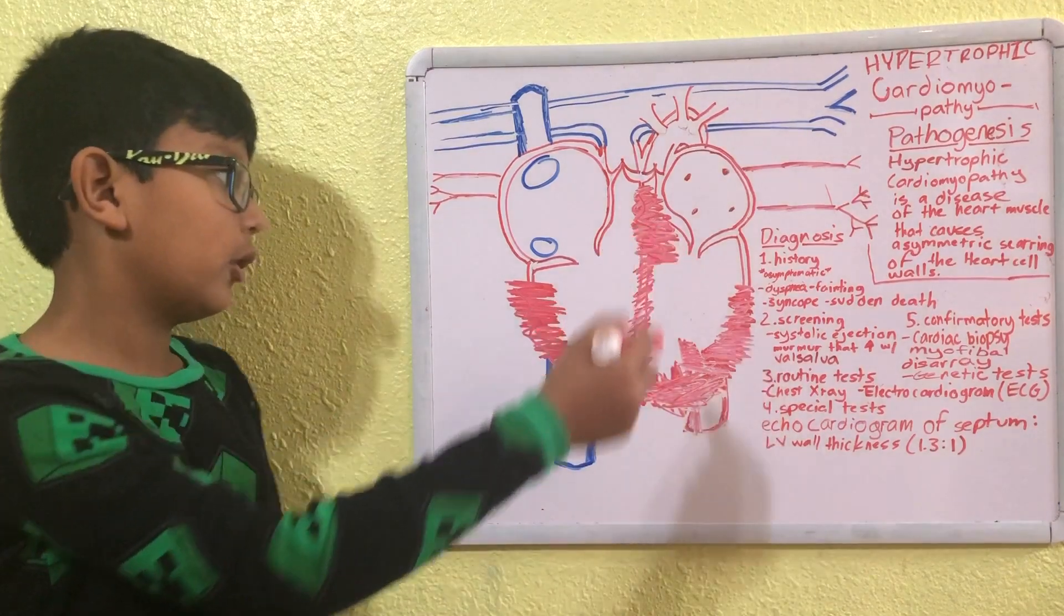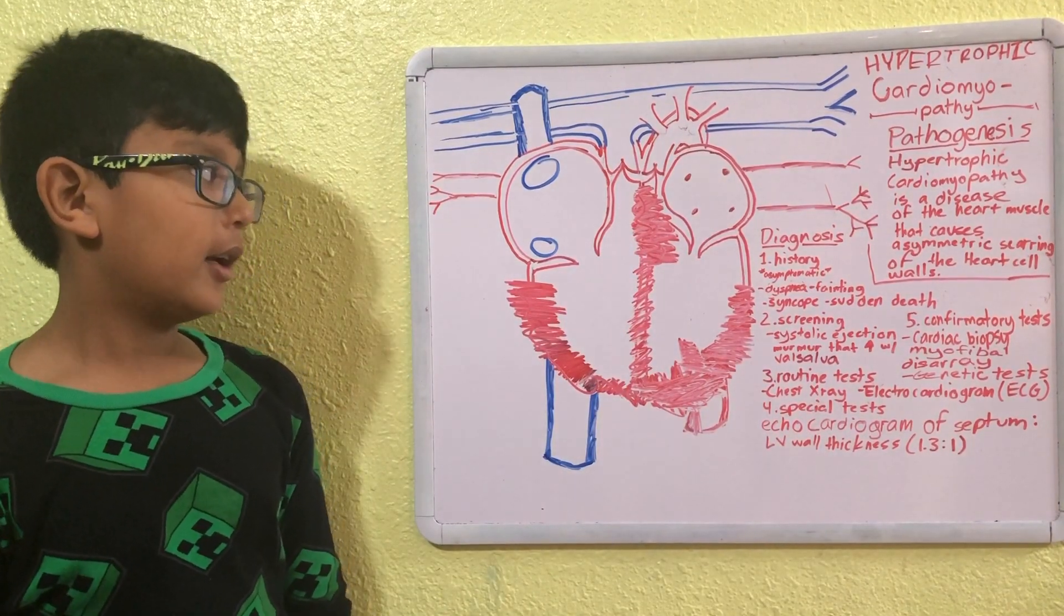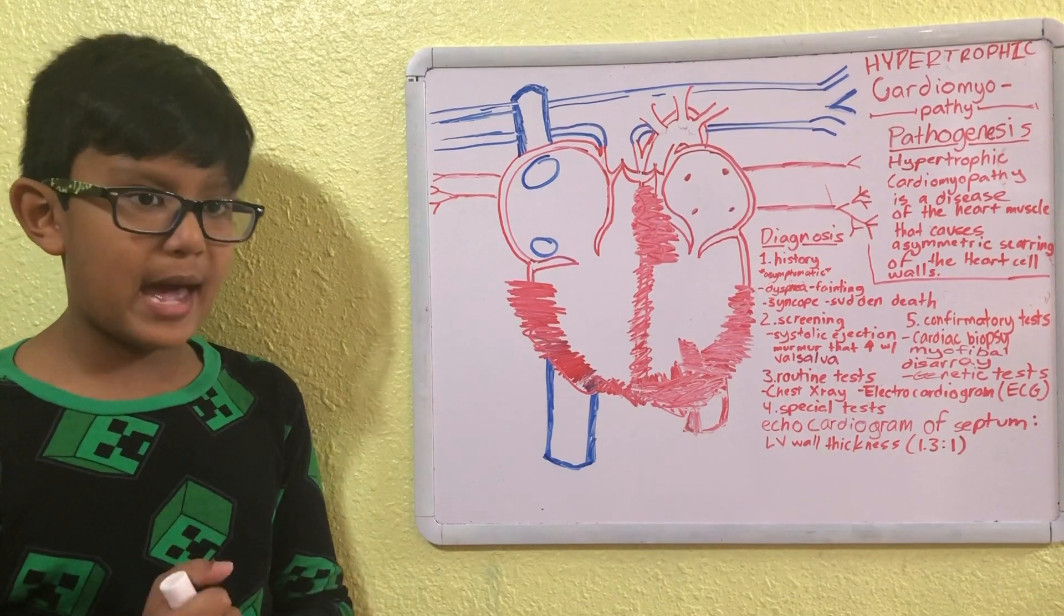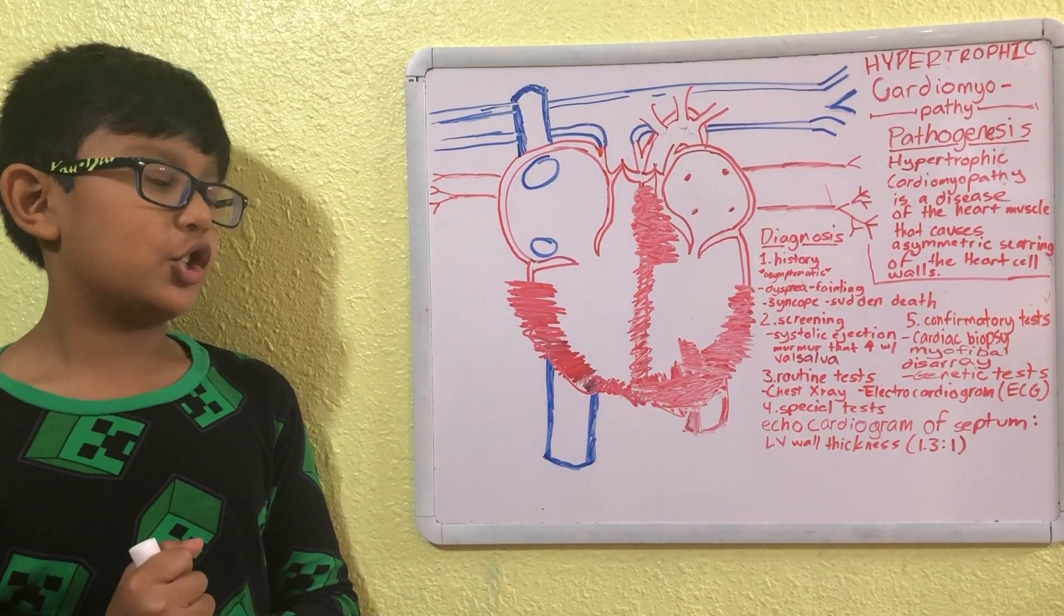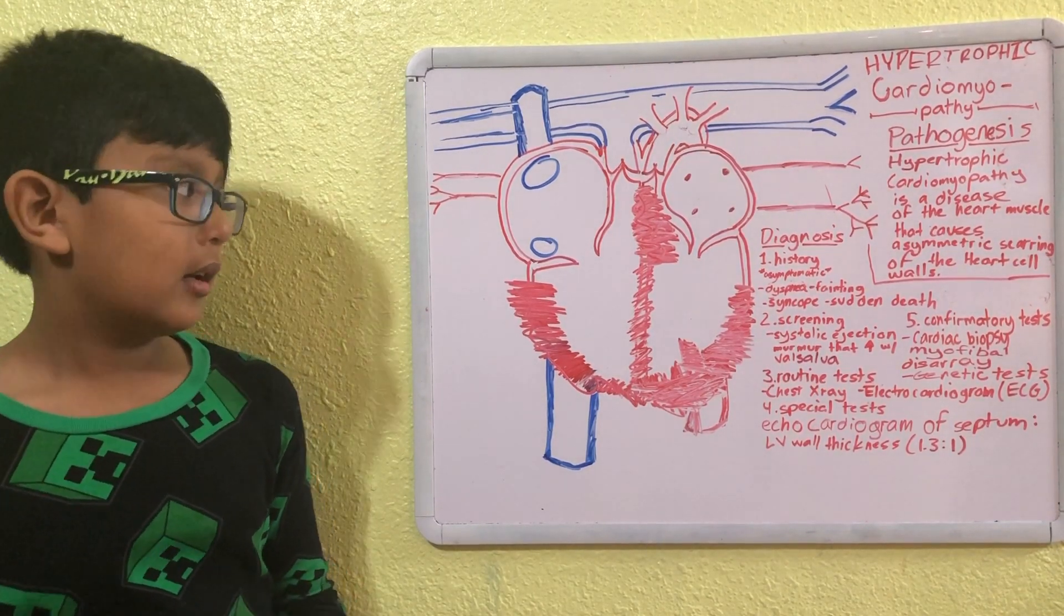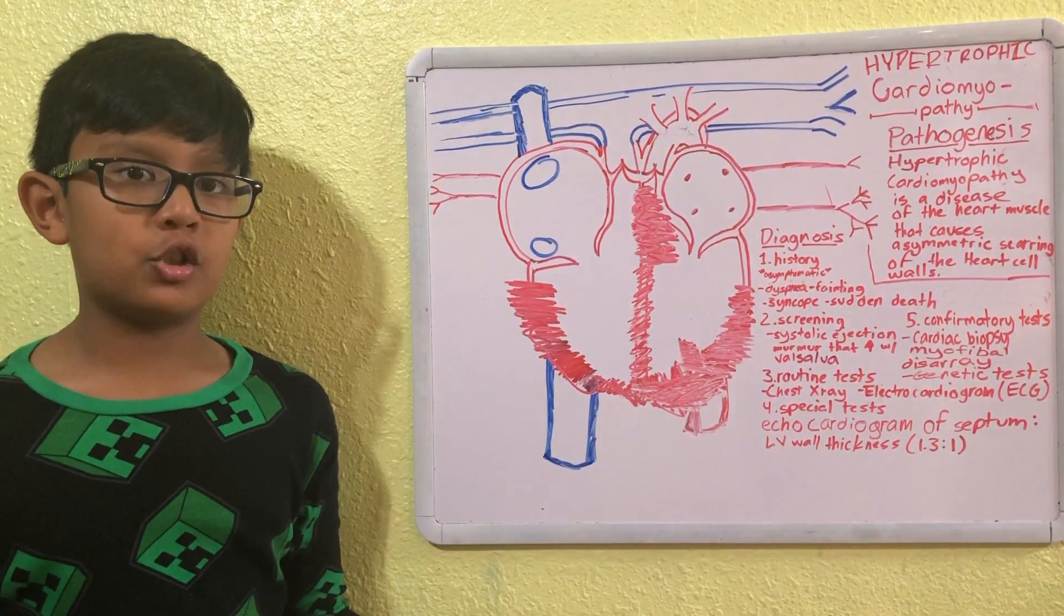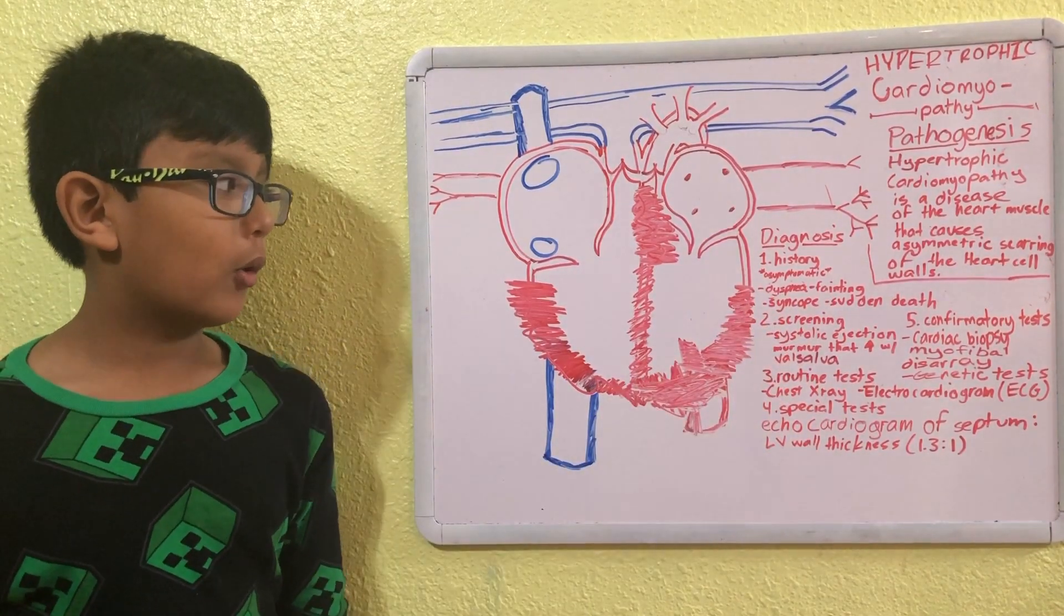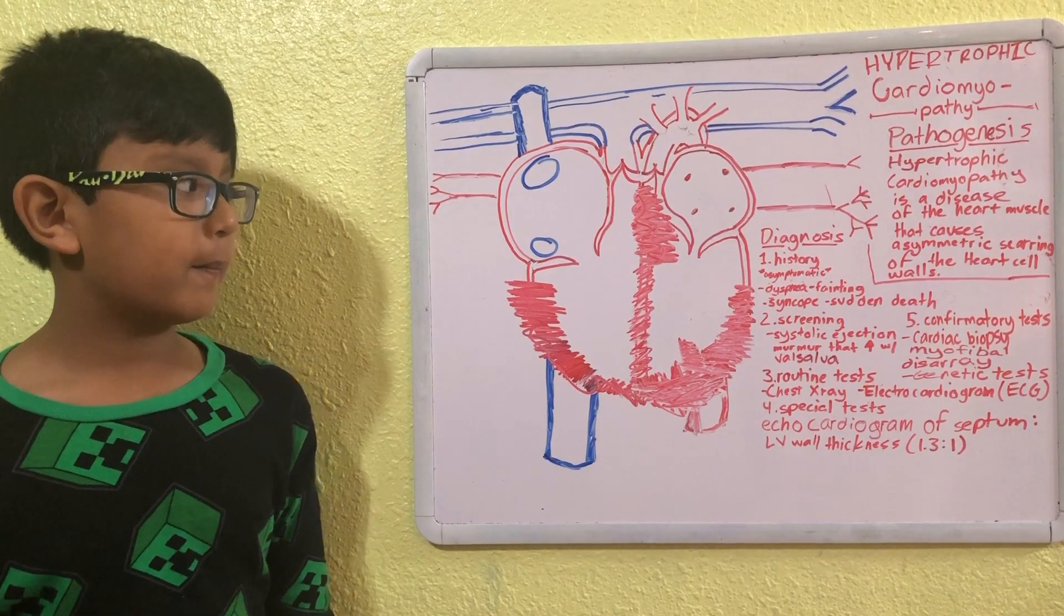talk about the diagnosis. The first one is history. Usually the patient is asymptomatic, meaning that they show no symptoms of the disease, but there could be things like dyspnea (aka shortness of breath), fainting, syncope, or sudden death—very sad. Moving on to number two: